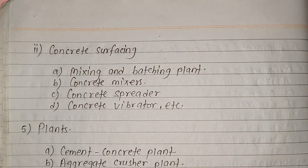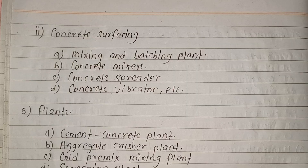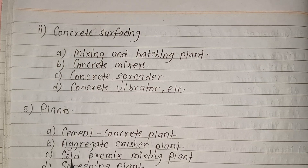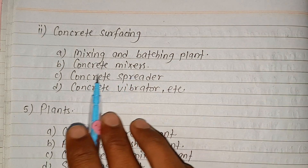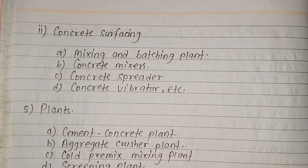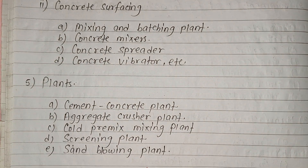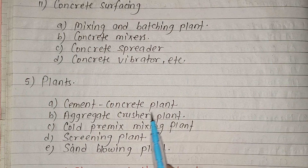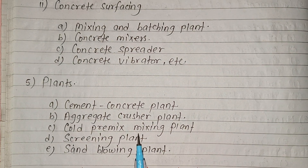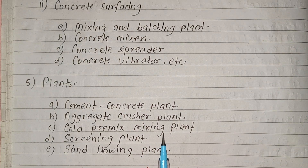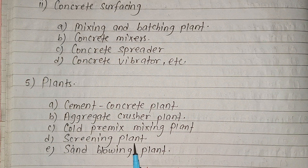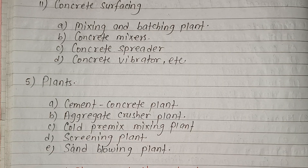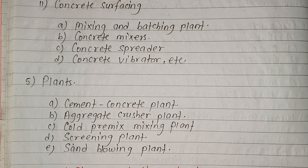For concrete surface: mixing and batching plant, concrete mixture, concrete spreader, concrete vibrator, cement concrete plant, aggregate crusher plant, cold premix mixing plant, screening plant, and sand boiling plant are required.